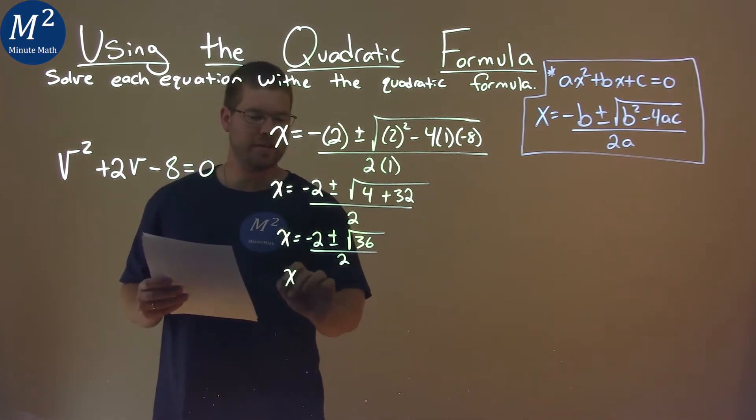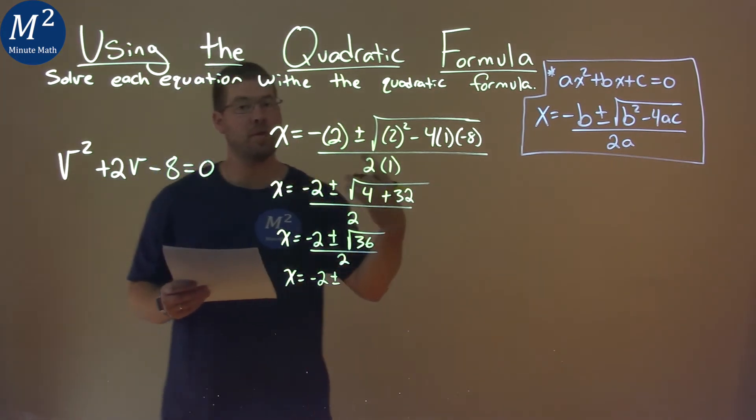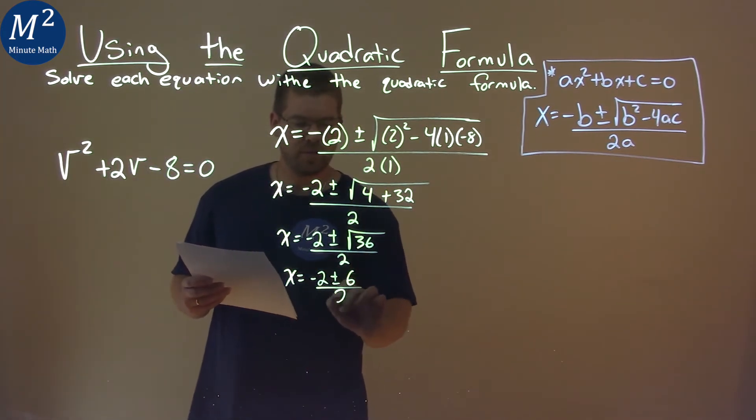Keep going, x equals a negative 2, plus or minus, square root of 36 is 6, over 2.